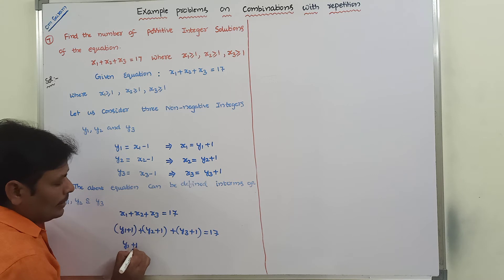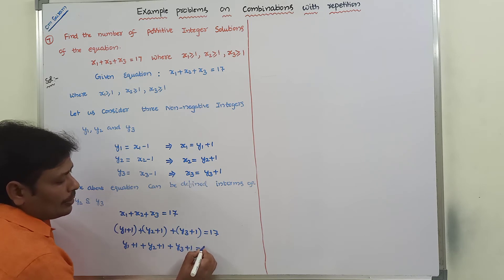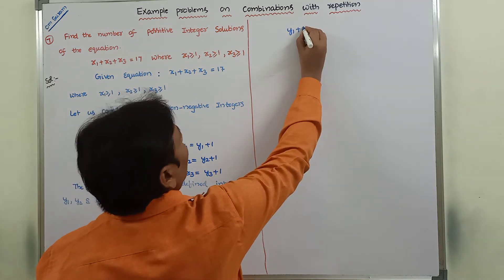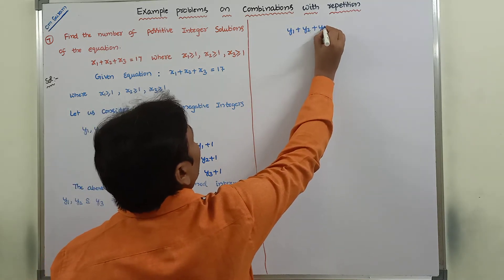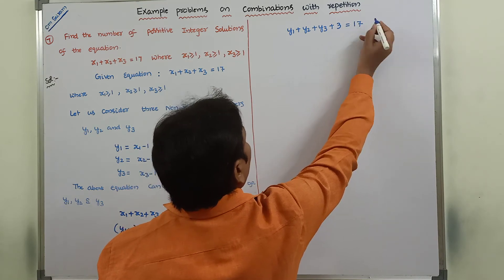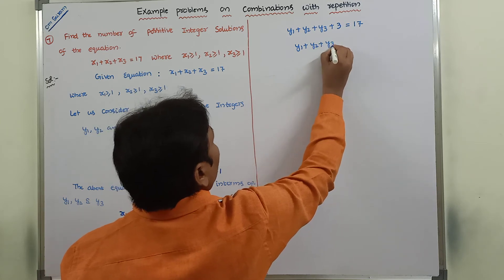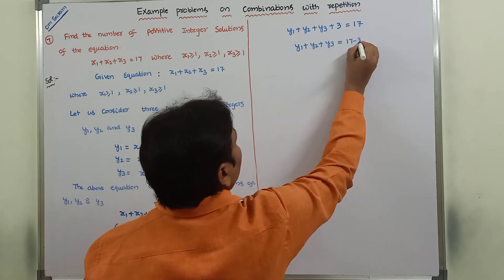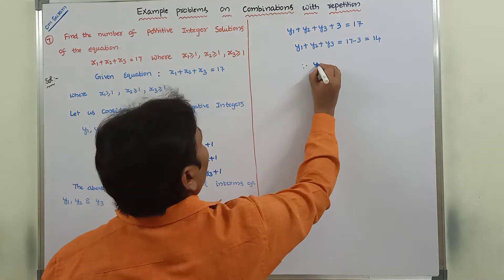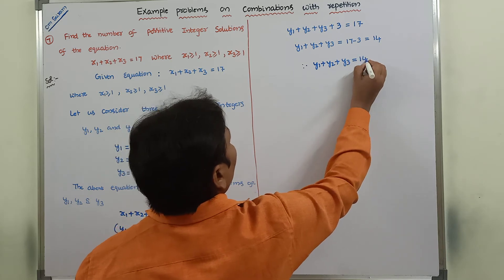So y1 plus 1 plus y2 plus 1 plus y3 plus 1 is equal to 17. This can be written as y1 plus y2 plus y3 plus 3 is equal to 17. Therefore, y1 plus y2 plus y3 is equal to 17 minus 3, that is equal to 14.